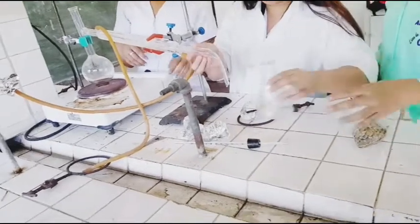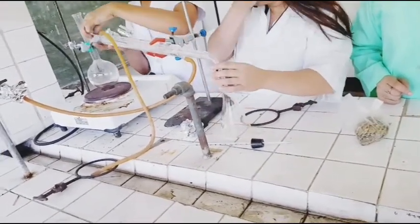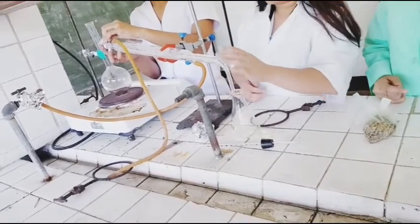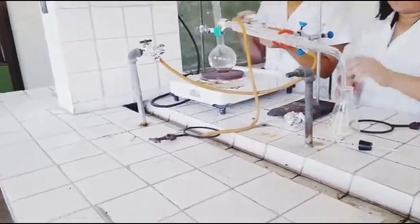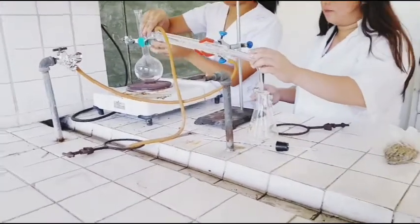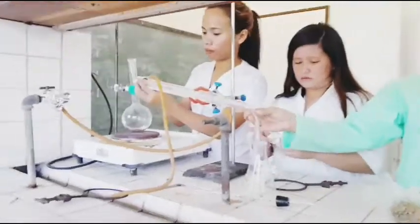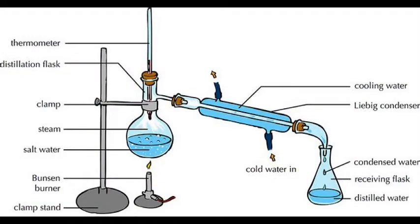The apparatus we will use in setting up the steam distillation includes: a distilling flask where we put the crude cinnamon, a condenser with a water-in and water-out, a vacuum adapter, and a receiving flask where we will collect our essential oil. We will also be using a heat source and an iron clamp. This is a sample picture of a steam distillation setup.